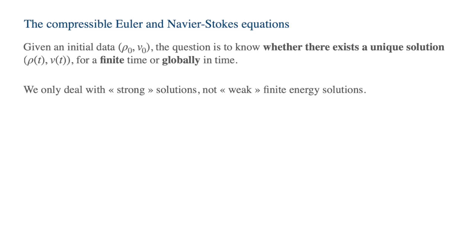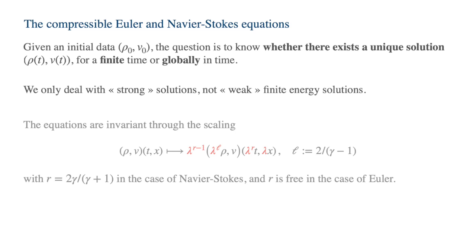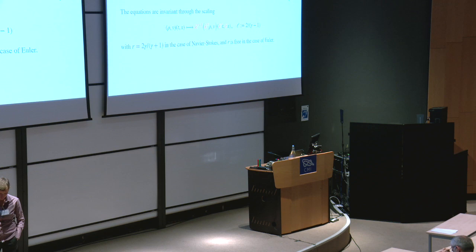Let's turn immediately to strong solutions — a fixed-point kind of solution. For that, we talk about scaling. For the Navier-Stokes equations there is a unique scale invariance given by a specific formula with parameter gamma. For Euler there is no right-hand side, so you have much more freedom — you can take any parameter R in the scaling. Euler has an infinite number of scaling invariances, while Navier-Stokes has one.